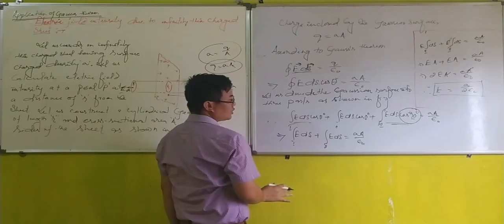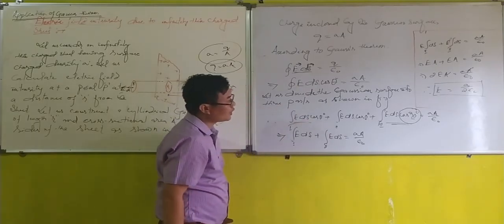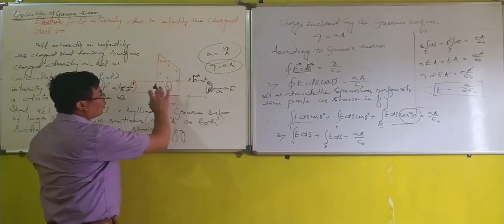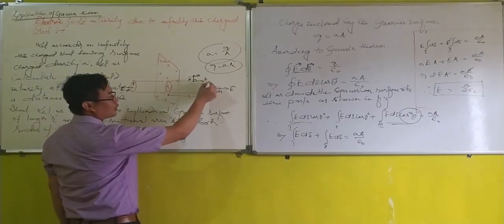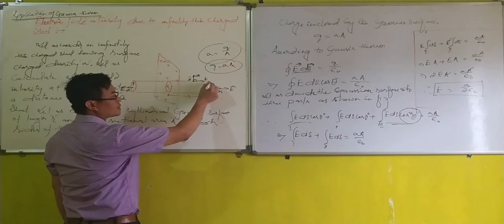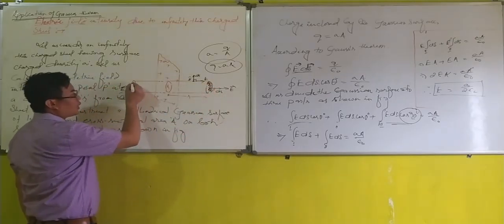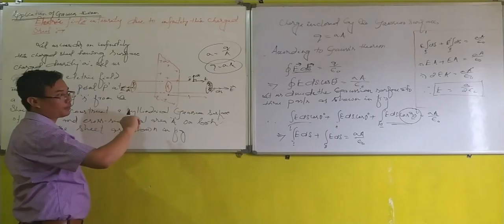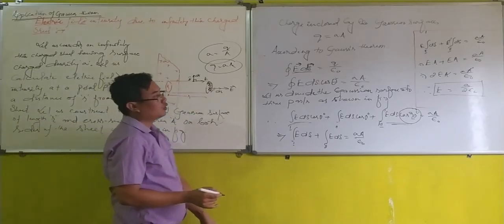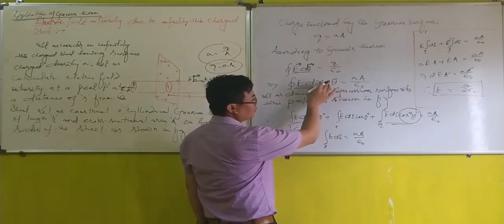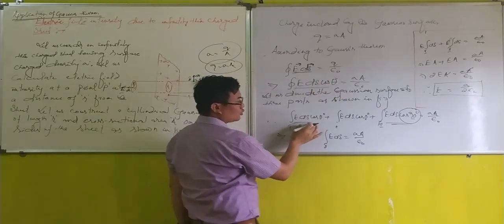Now, let us divide the Gaussian surface into three parts, as shown here. This Gaussian surface is divided into three parts. The first part, part one, is this cross-sectional area. Part two, this cross-sectional area. And part three, the lateral surface area. Therefore, the left-hand side of the equation can be split into three parts.